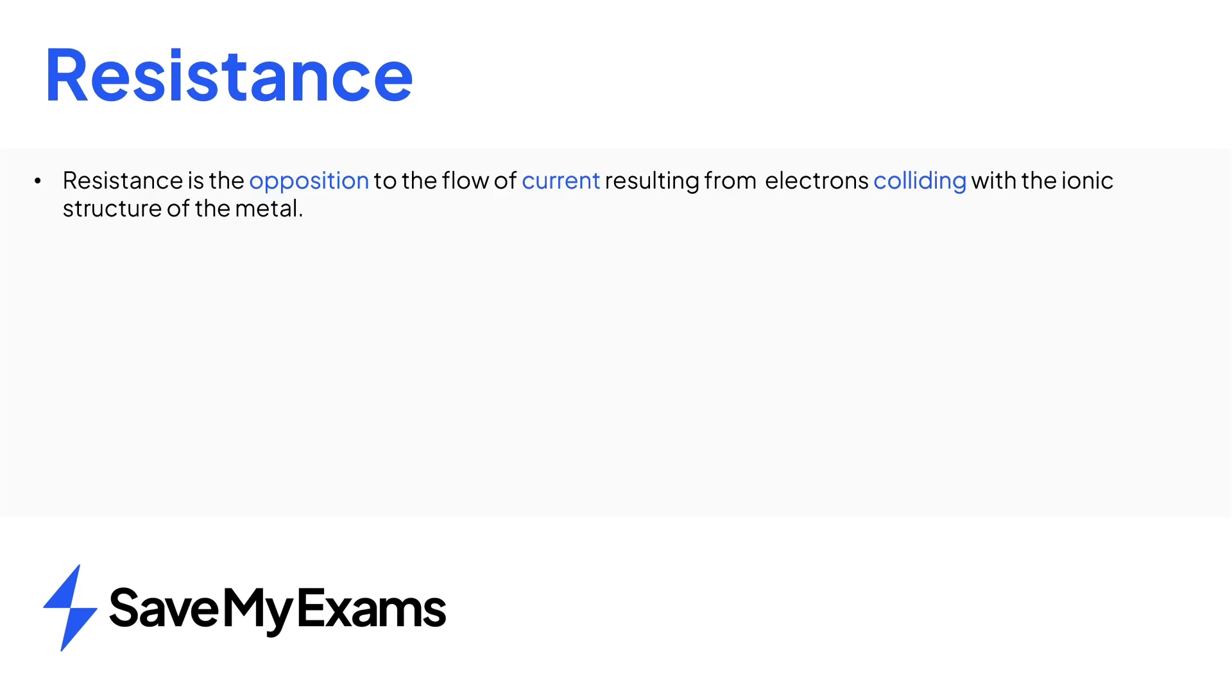In summary, resistance is the opposition to the flow of current, which occurs because those delocalised electrons collide with the metal ions.